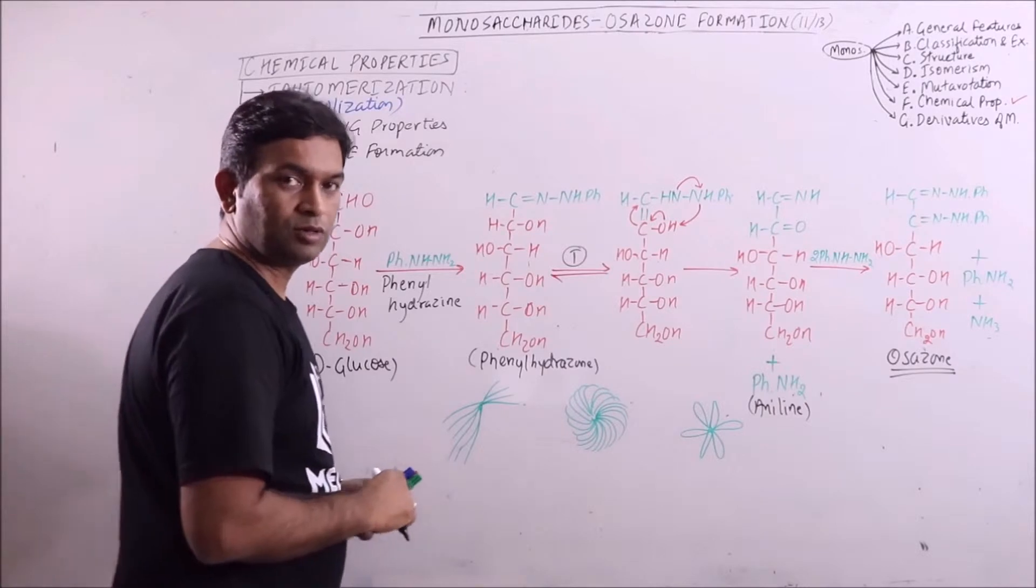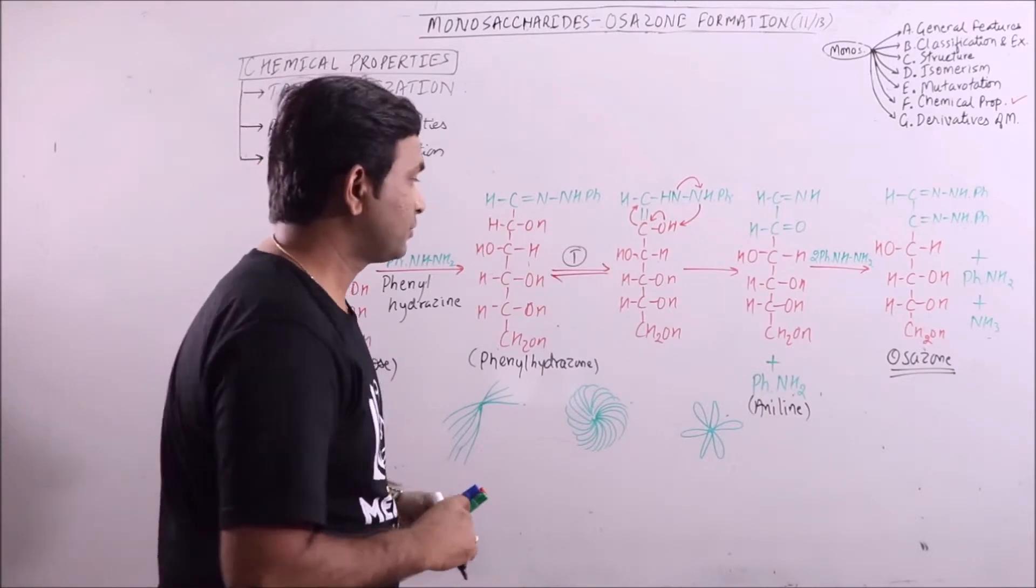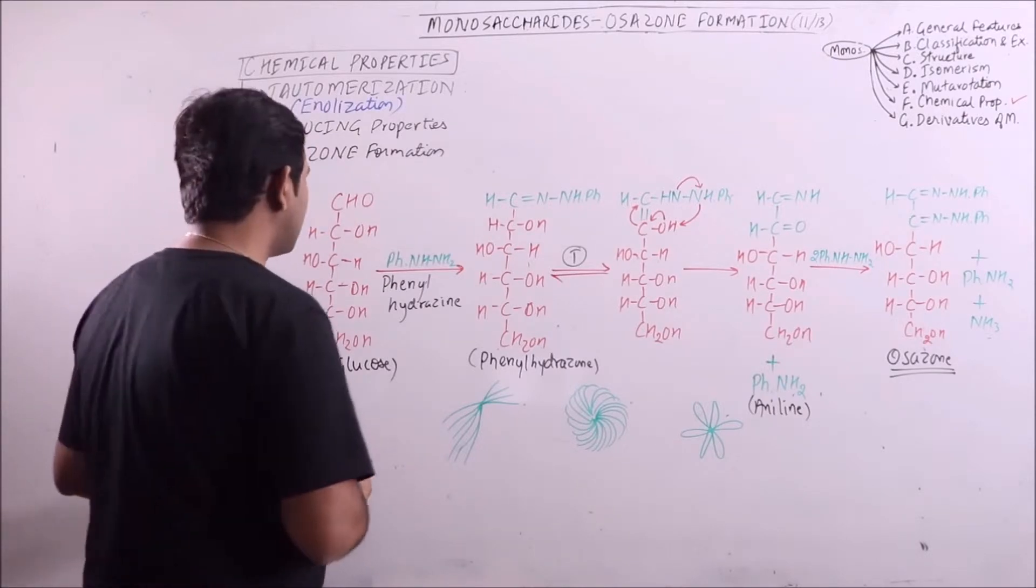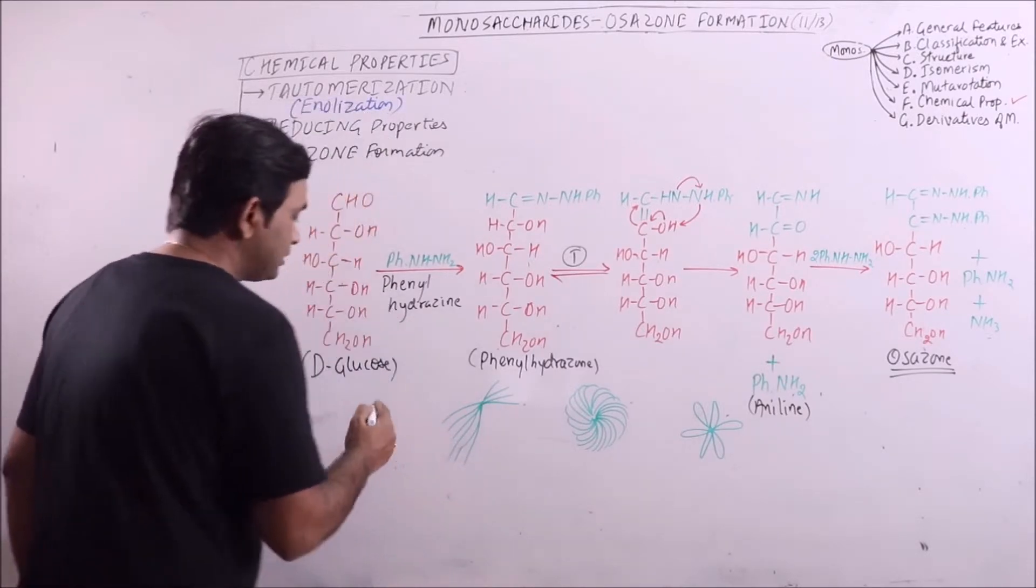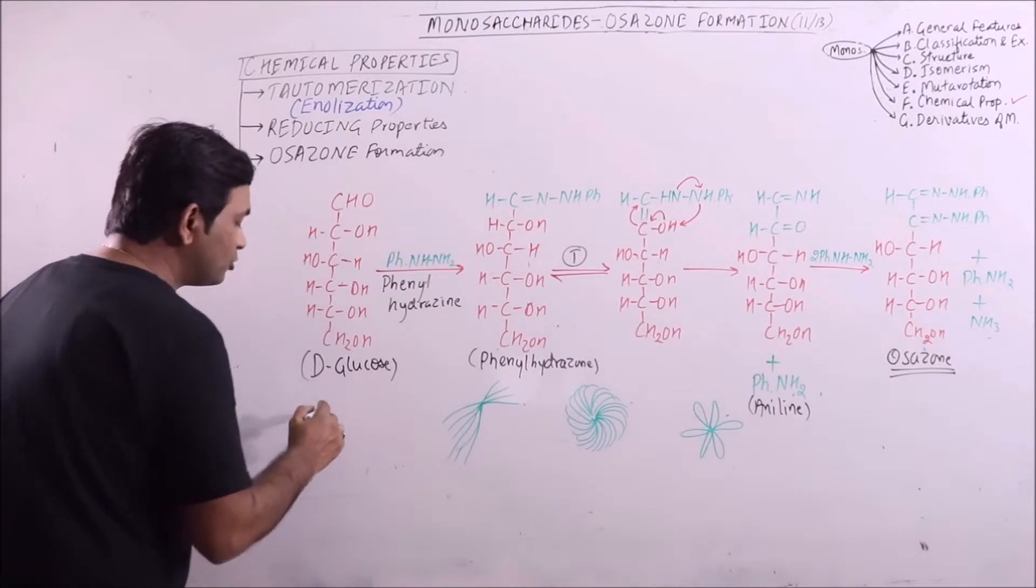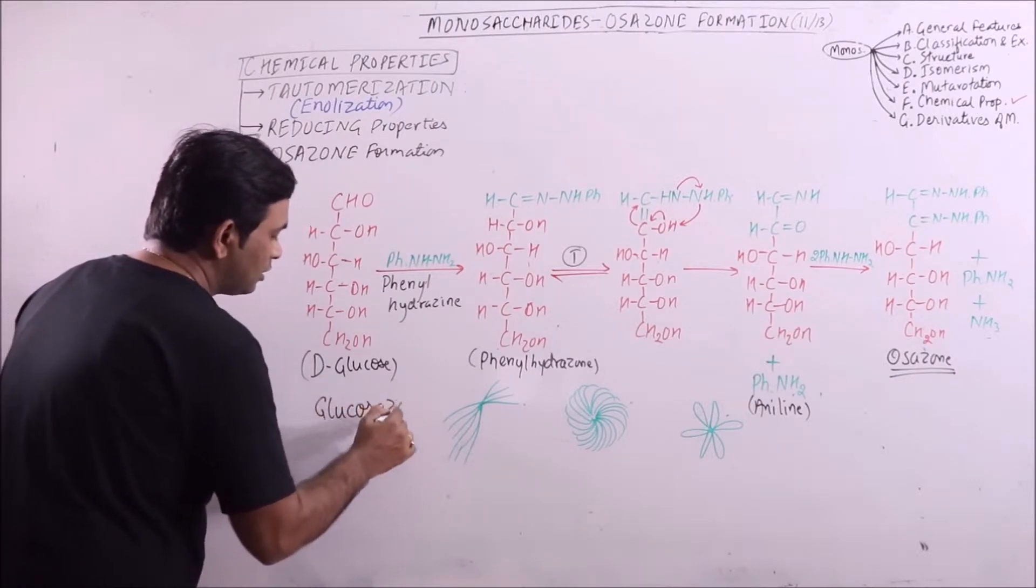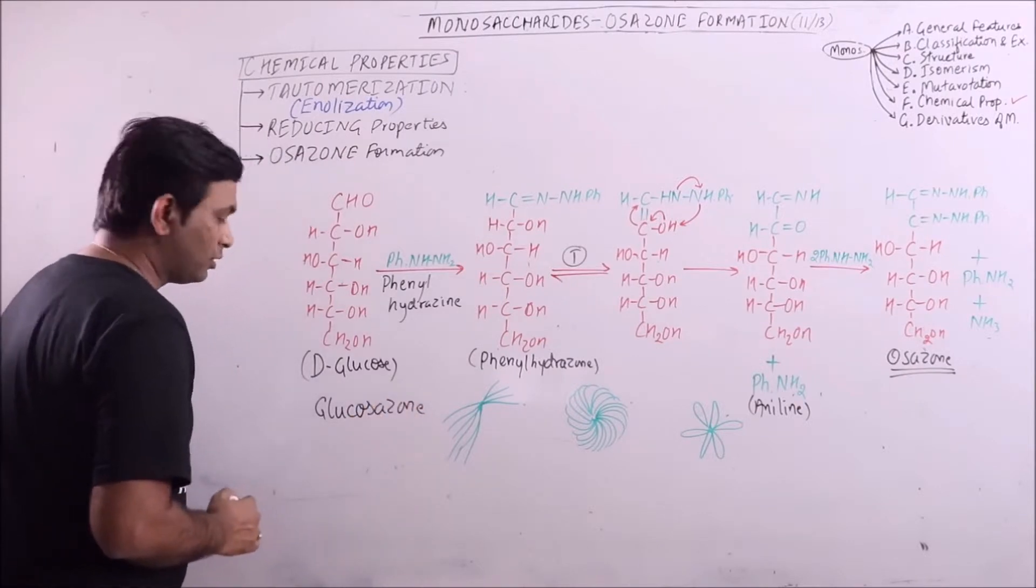These osazones are basically crystals with specific shapes for particular sugars. For example, if we take D-glucose then glucosazone will be formed.